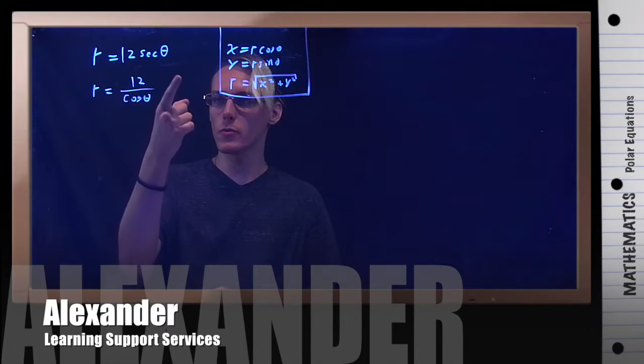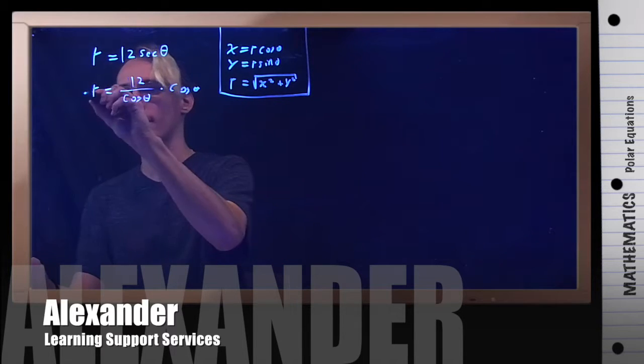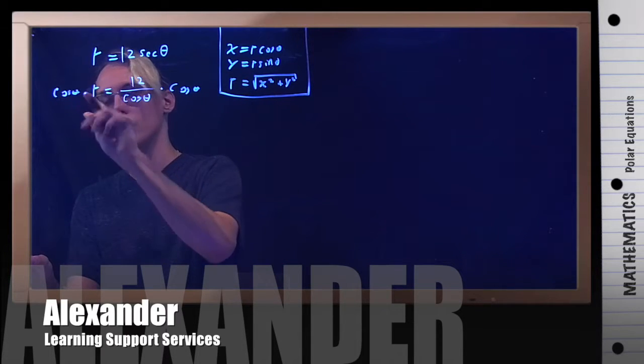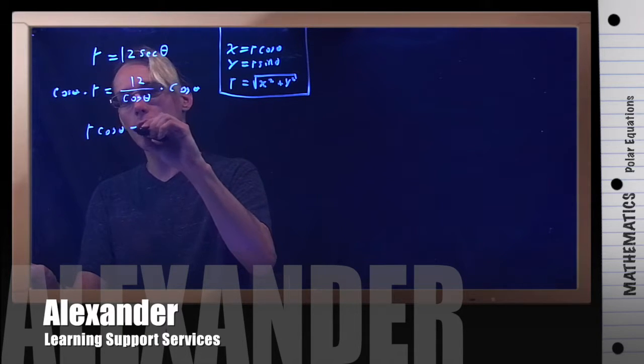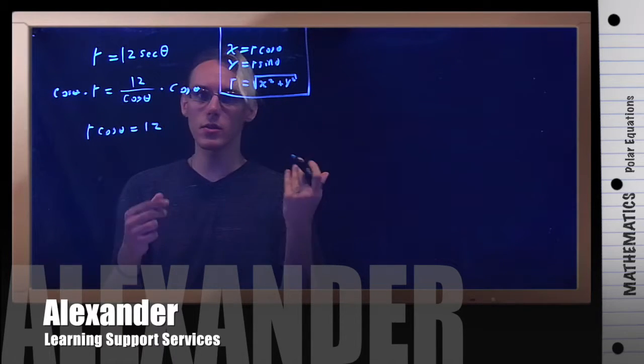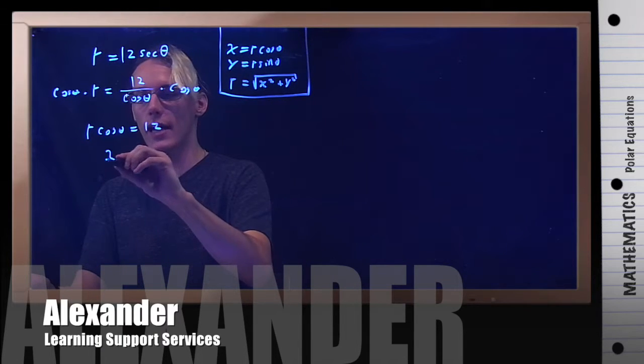Now in this form, I can multiply both sides by cosine theta. And if I do so, and then swap these around, I have that r cosine theta is equal to 12. Well, what's r cosine theta? It's x. So this is really just x equals 12.